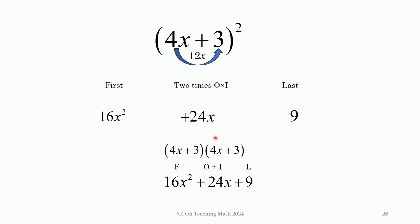And of course, the last is 9. If you wanted to do FOIL instead, like this, you could do that either way. So, binomial squared is that binomial times itself. You could write it like this. You could do the shortcut I just showed you.